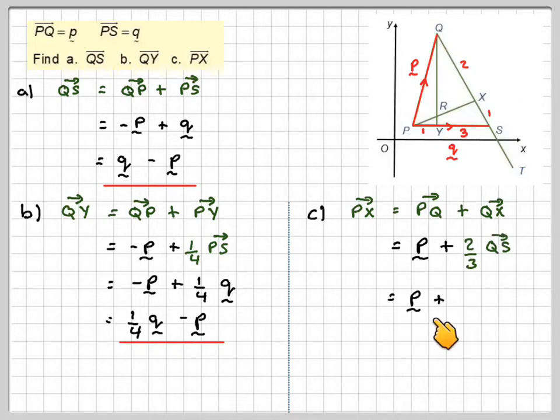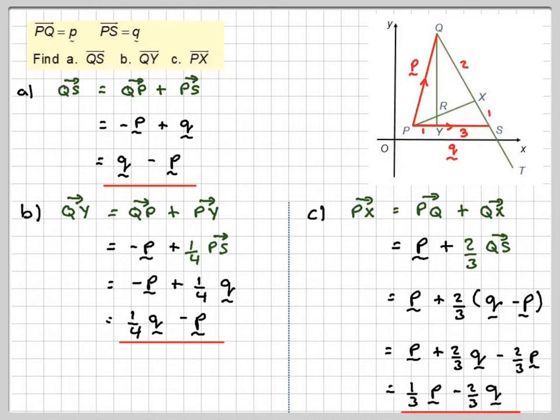So that's going to be p plus 2 thirds of my answer for part A. We'll put that 2 thirds in brackets and expand the brackets like normal algebra. So that's p plus 2 thirds q minus 2 thirds p. Now p minus 2 thirds p is 1 third, so we get 1 third p plus 2 thirds q.